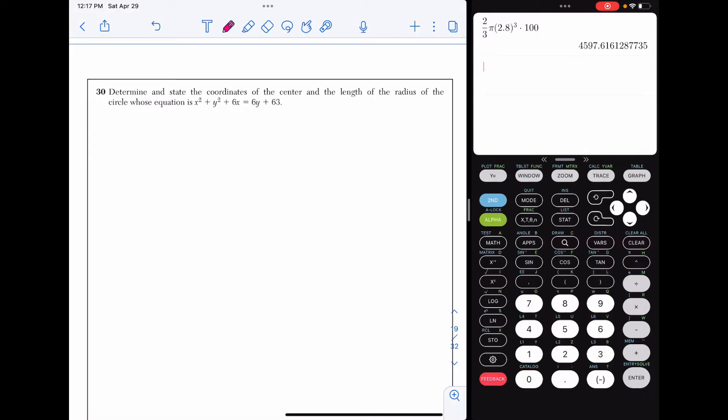Question 30. Determine and state the coordinates of the center and the length of the radius of the circle, whose equation is x squared plus y squared plus 6x equals 6y plus 63.